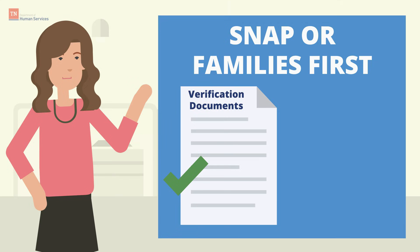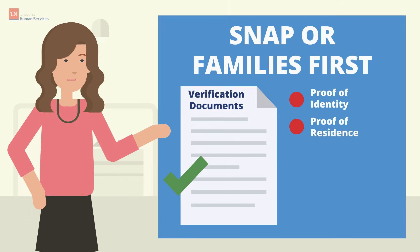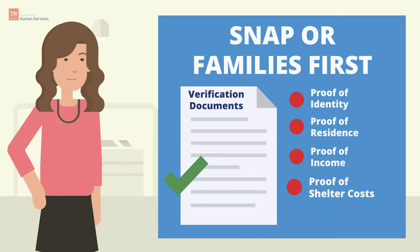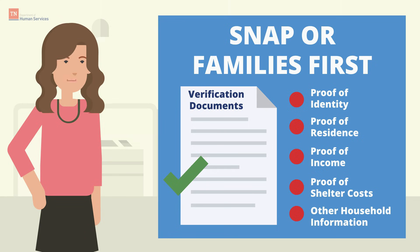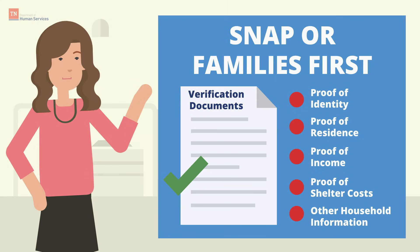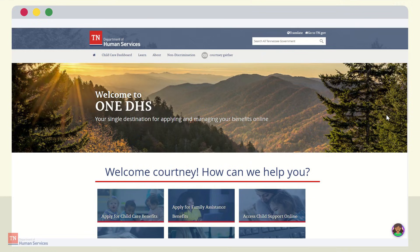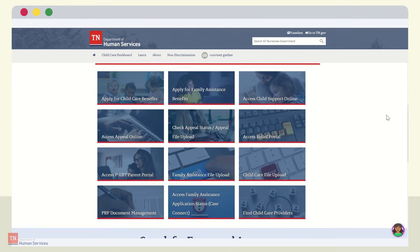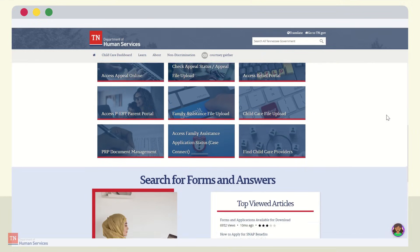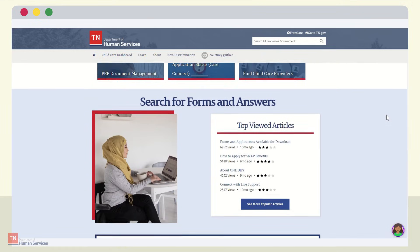These include documents such as proof of identity, proof of residence, proof of income, proof of shelter costs, and other household information. Submitting this information to TDHS can be done easily without visiting a TDHS office by using the OneDHS customer portal.